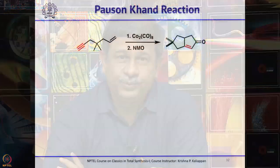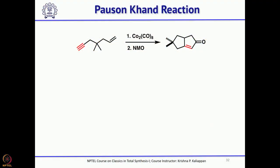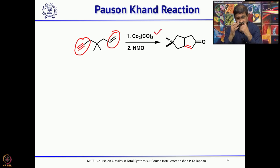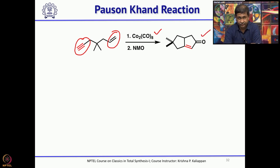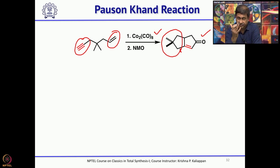The Pauson-Khand reaction is one reaction where people routinely use to make 5-membered rings. For example, if you have a double bond and a triple bond that are appropriately placed, then if you treat with dicobalt octacarbonyl followed by oxidation with N-methylmorpholine N-oxide or dimethyl sulfoxide, one can get the corresponding cyclopentenone. This Pauson-Khand reaction will give a 5-membered ring.